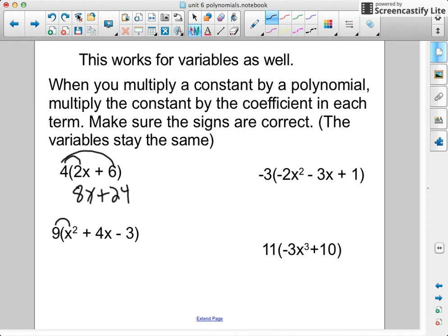This one, if there's nothing in front of the variable, it's always assumed that it's a 1. So multiplying by those. 9 times 1 is 9, so it'd be 9x squared plus 36x minus 27.